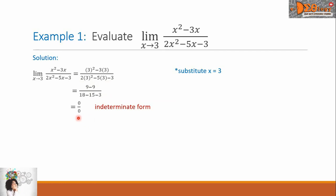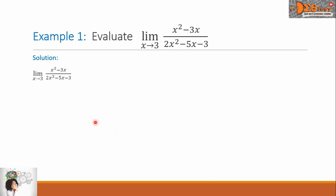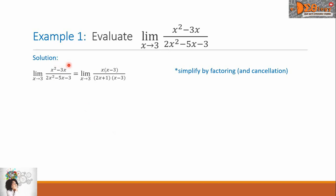This form is what we call indeterminate form. We do not accept this as an answer. We will use another method: we are going to simplify the function by factoring first, and afterwards check for possible cancellations. The numerator x squared minus 3x factors into x times the quantity x minus 3, all over the denominator whose factors are 2x plus 1 times the quantity x minus 3.